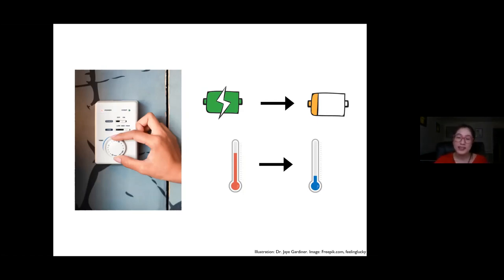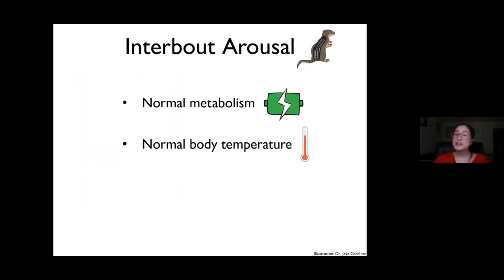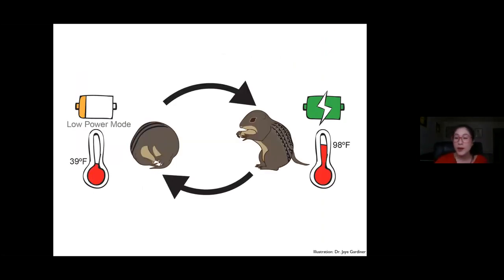However, this state of torpor isn't the only thing that happens during hibernation. In our ground squirrels, torpor will last anywhere from 1 to 24 days, depending on how deep into the winter season it is. And torpor is interrupted by periods of interbout arousal when the squirrel's metabolism and body temperature return to normal. These arousals are very brief and only last about 12 hours, after which the squirrel will re-enter torpor. And it continues to cycle between torpor and interbout arousal for the entire six months of hibernation. So the next thing I'm going to show you I'm really, really excited about because I actually have two videos of squirrels awakening from torpor and entering their interbout arousal. And these are by far my favorite thing that I like to share. But before I show you the videos, I want to give you some context about how we captured these videos.